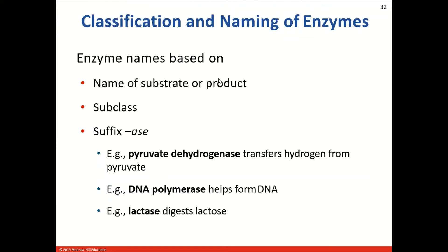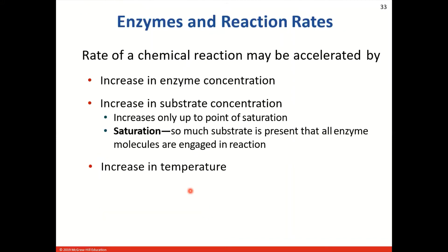How do we classify and name enzymes? Enzymes are named based on the name of the substrate or the product, and we have numerous different subclasses. The suffix is A-S-E. Here are a few examples: pyruvate dehydrogenase transfers hydrogen from pyruvate; DNA polymerase adds nucleotides or base pairs onto the DNA molecule; and lactase is an enzyme that digests lactose.